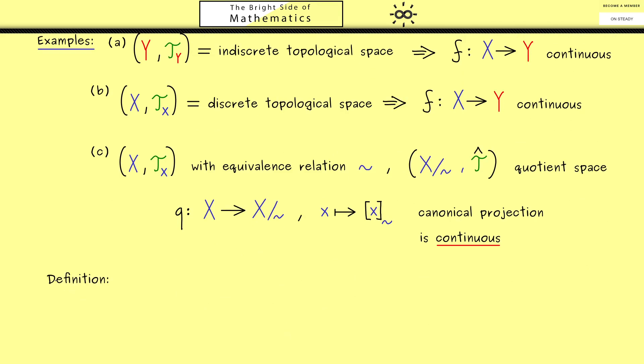There we also discussed continuity by using sequences. And indeed this leads to a second continuity definition. So even if we take abstract topological spaces X and Y, we know that the notions of a sequence and a limit make sense. Therefore we can do the same as in metric spaces or as in R and define the term sequentially continuous.